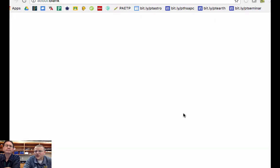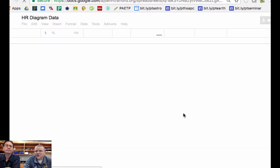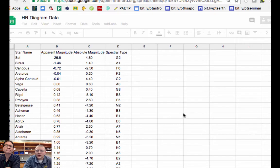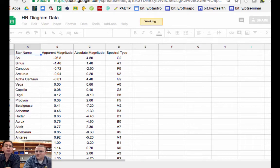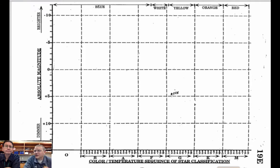Click on the HR diagram data and you'll see a table with about 33 stars listing their apparent magnitude, their absolute magnitude, and spectral type. Now we really only need two pieces of this information for the HR diagram. We need those last two columns which are absolute magnitude and the spectral type. So now that we've got that, let's graph.